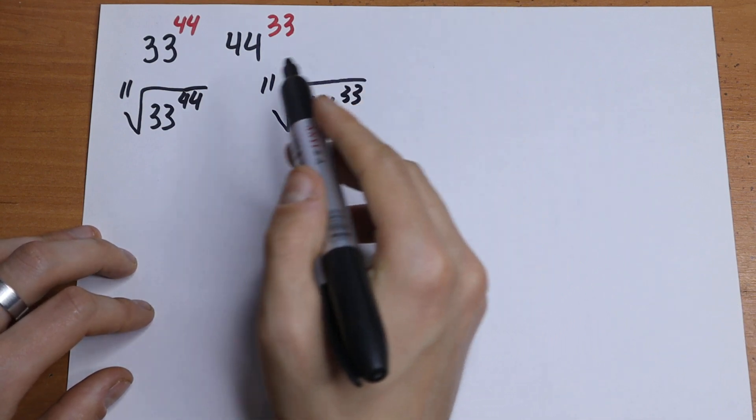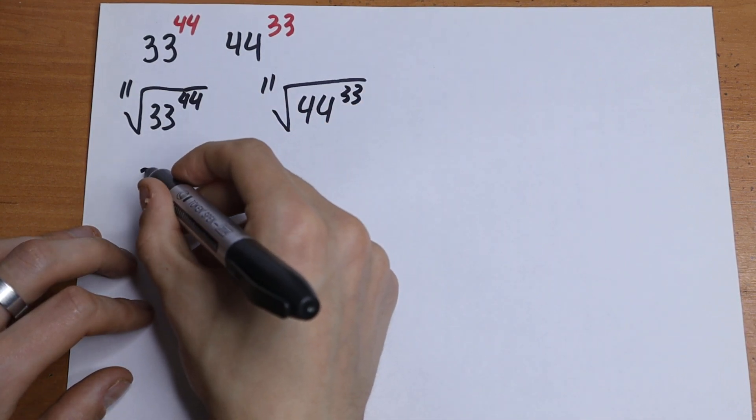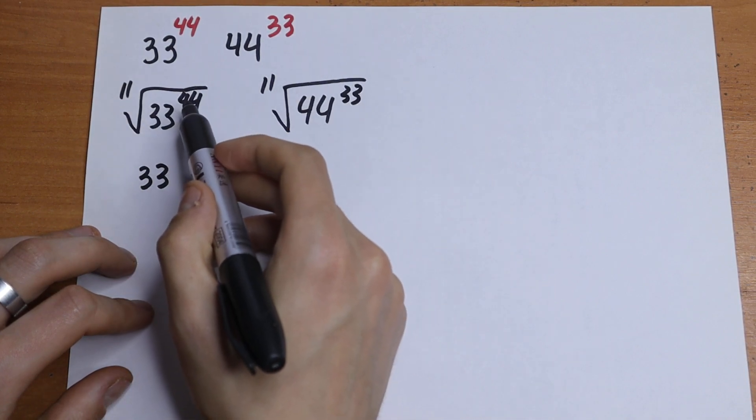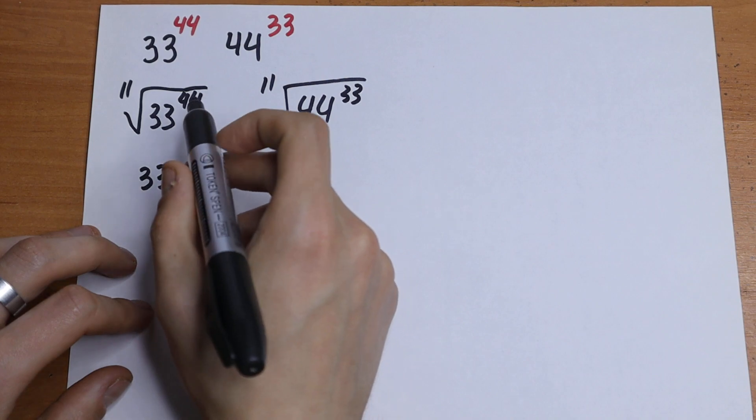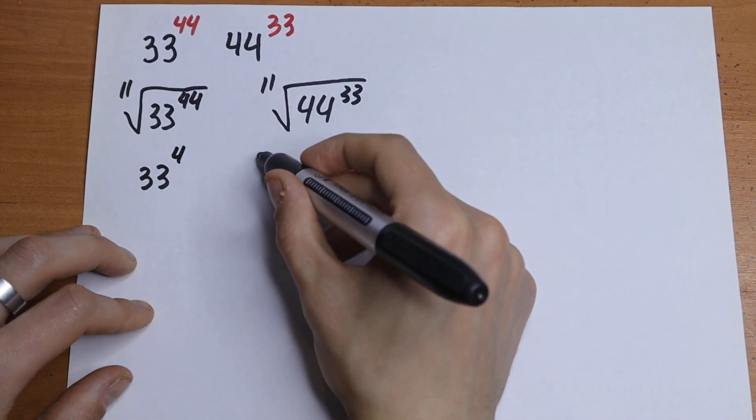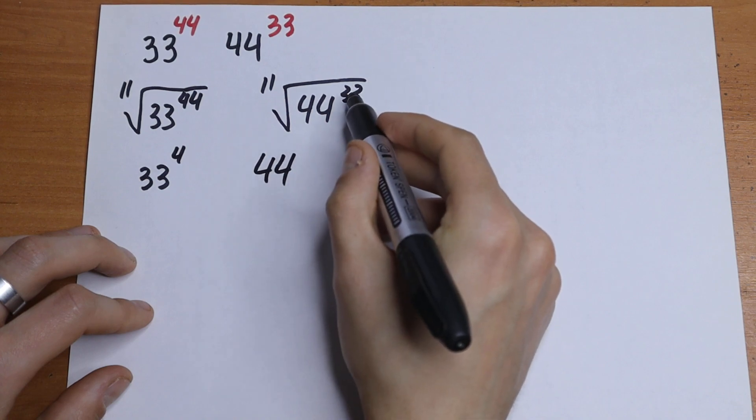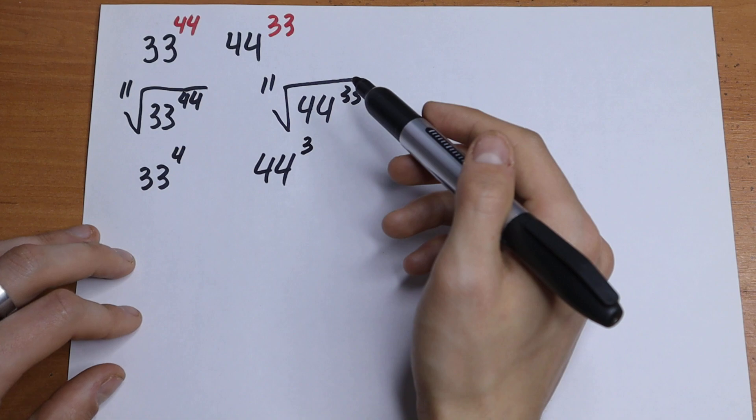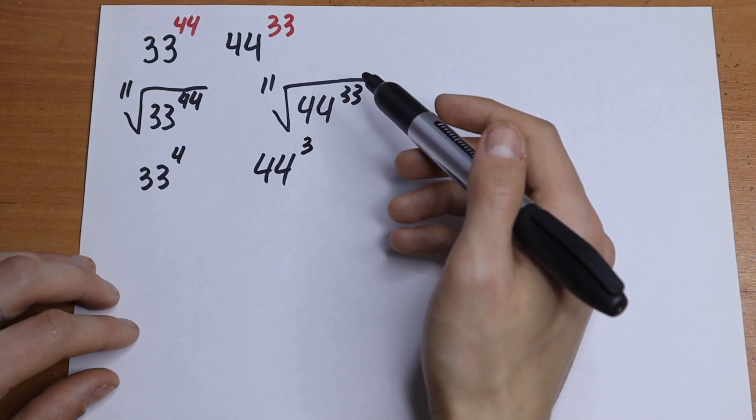We will have as a result 33 to the power of 44 over 11, and we can divide this and it will be equal to 33 to the 4th and 44 to the power 3rd. Really good simplifying trick. So let's go next.